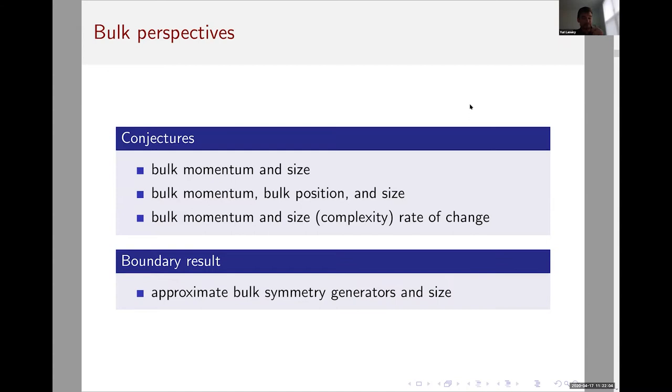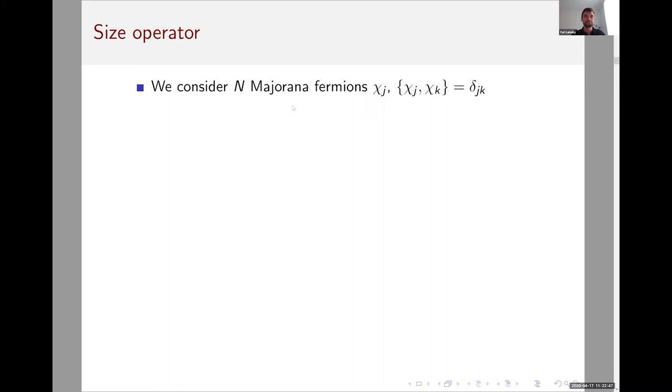Something in that direction has already been done before this work by Maldacena, Lin, and Yang. They found that they were studying approximate symmetry generators in the bulk dual of SYK. They found that some expectation value of linear combinations of these symmetry generators is equal to a particular definition of size on the boundary. We'll actually reprove their result in a different way, more directly from SYK, and we'll also be able to extend it to bulk operators.